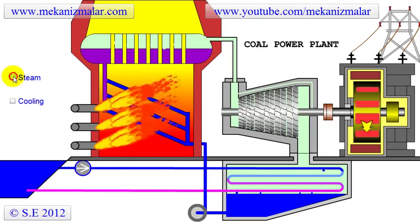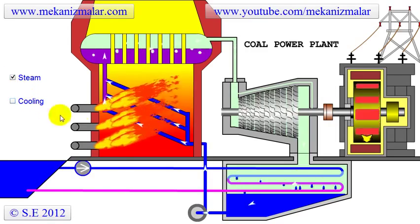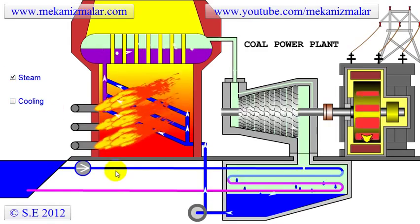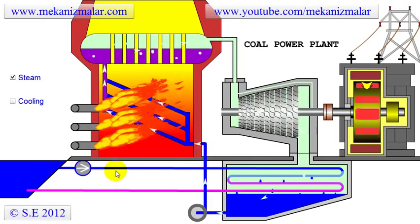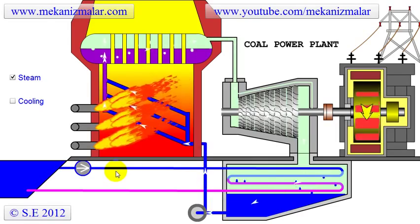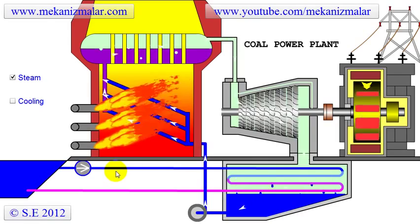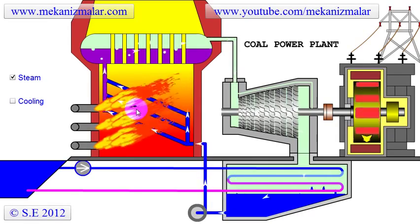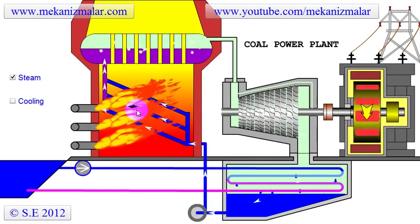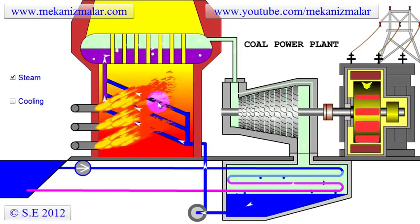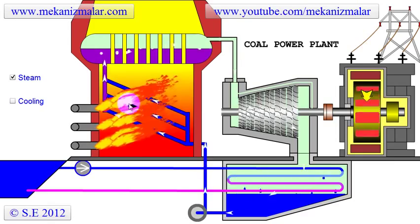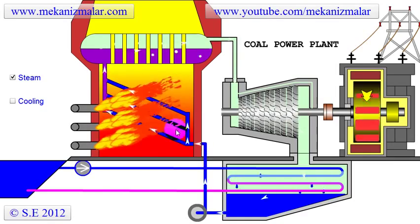Let's begin by describing the closed-loop power cycle, or the steam cycle, starting from the furnace. First, intense heat inside the furnace heats the water within the coils, which is coming from the condenser.